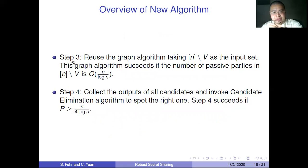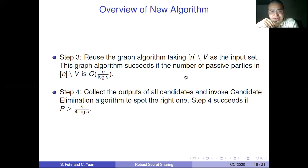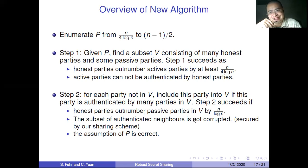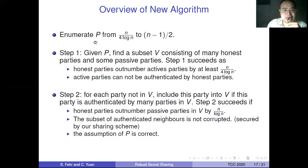Step three uses the graph algorithm taking the complement of V as the input set. If step two fails, then step three will succeed, because step three succeeds if the number of passive parties in the complement of V is relatively small. If V is big then V-complement is small, so either step two or step three will succeed. Step four uses the candidate-elimination algorithm, which only selects the right candidate codeword; it succeeds when P is not too small, which is ensured by the enumeration.